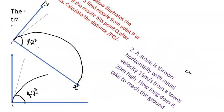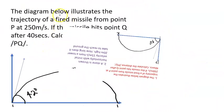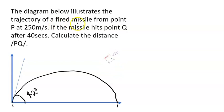With the first question, the first question tells us that the diagram below illustrates the trajectory of a fired missile from point P at 250 meters per second. Now, look at it. If you look at this diagram below, please do not mind my sketch. This is point P, and point Q.